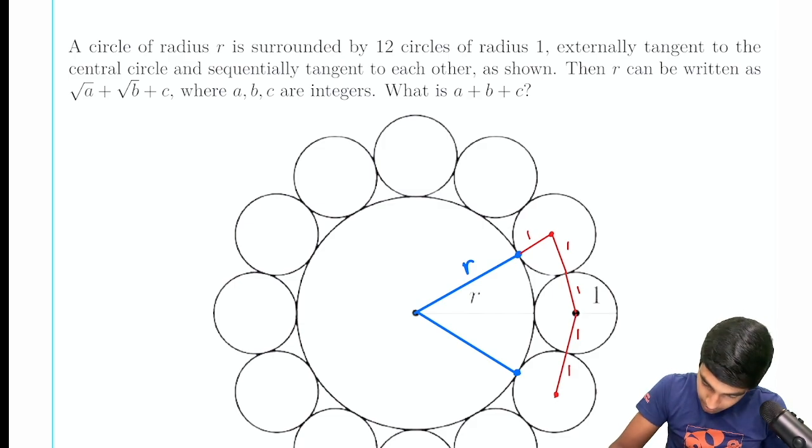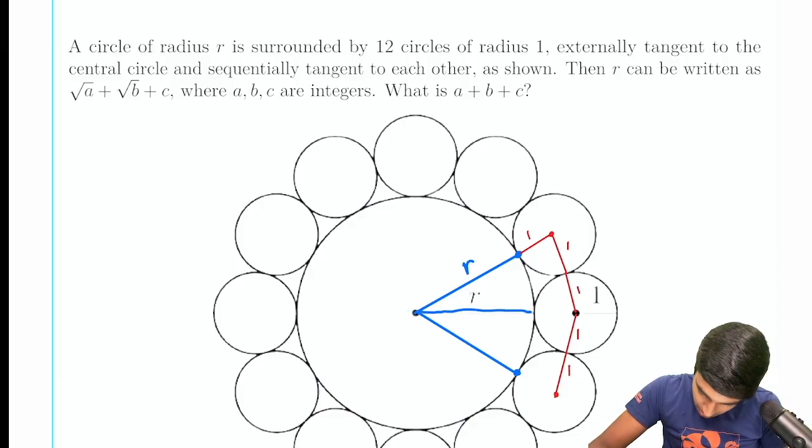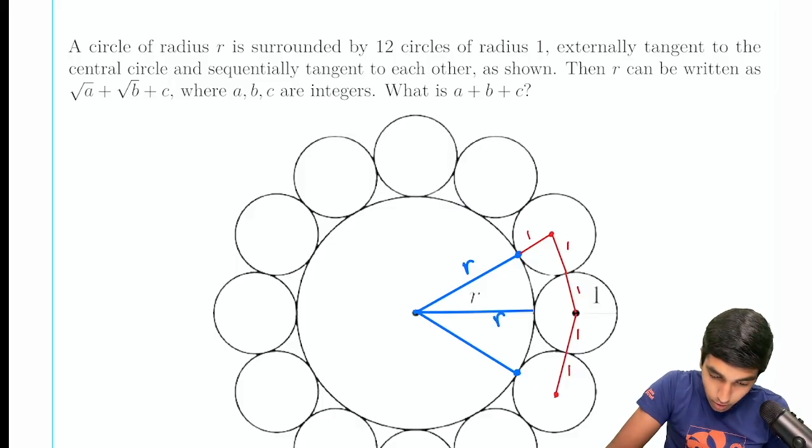Similarly, we have that if you draw this radius out as well, it's also going to be r. And this is also going to be 1.